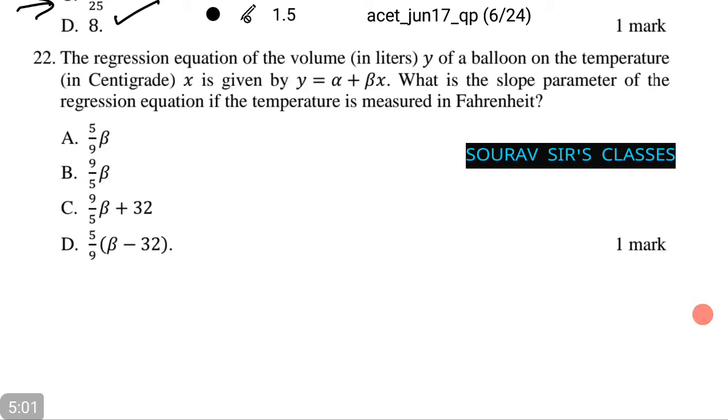Now, in the next question, we have the regression equation of the volume in liters y of a balloon on the temperature in centigrade x is given by y equals alpha plus beta x. We need to find out what is the slope parameter of the regression equation if the temperature is measured in Fahrenheit.